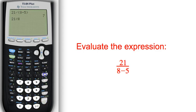If we were to not put those into parentheses, the calculator would apply the order of operations, divide 21 by 8, and then subtract 5 from that answer, giving us the incorrect answer of negative 2.375. Again, this is not correct. The bottom part must be in parentheses.